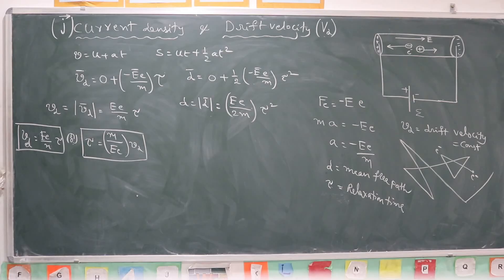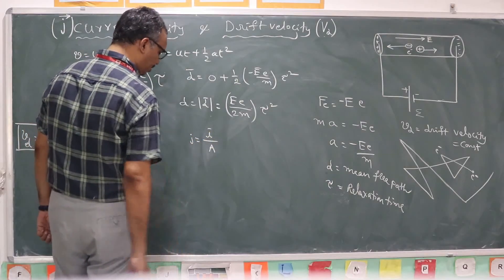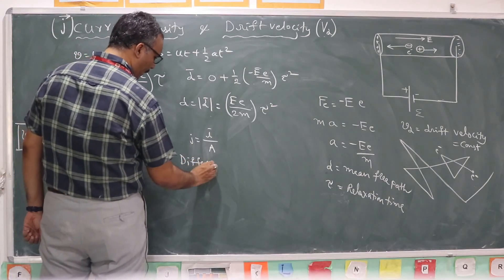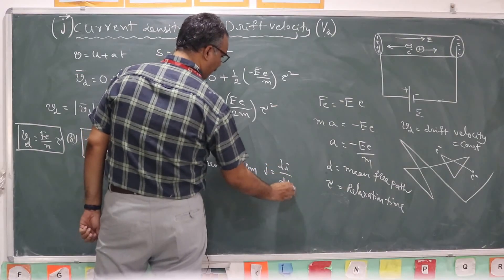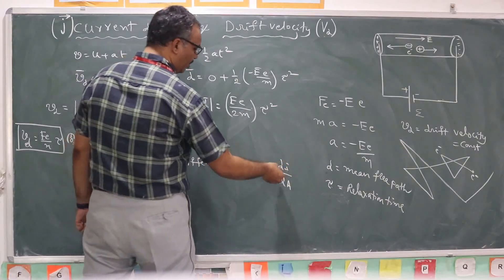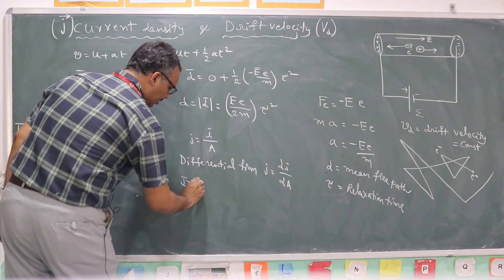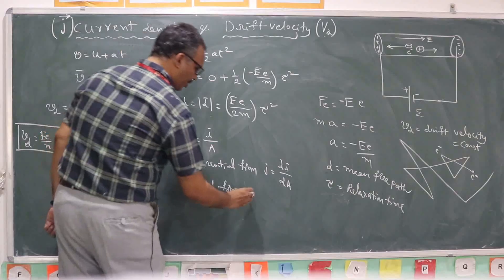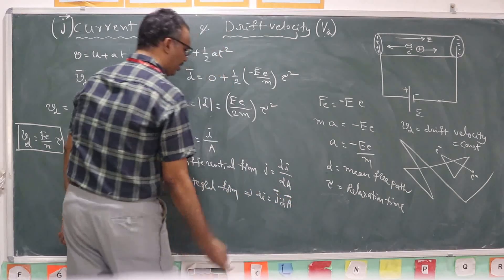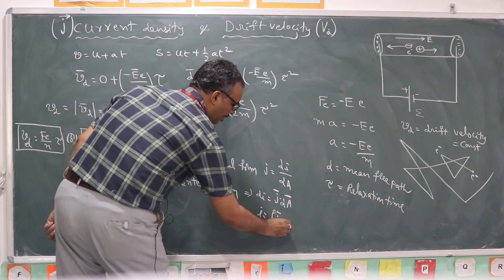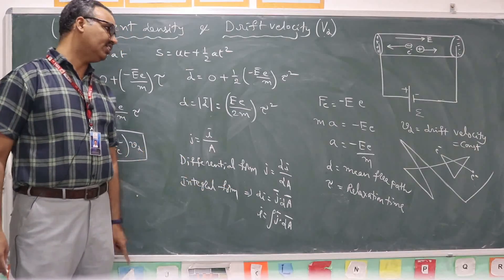Now coming to current density — already defined as current passing through unit area in normal direction. You can write it in differential form: J = dI/dA, meaning dI is the small amount of current passing through a small area dA. In integral form, considering J and dA as vectors with current as scalar: I = ∫ J⃗ · dA⃗. This is the differential form and integral form of current density.